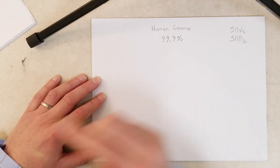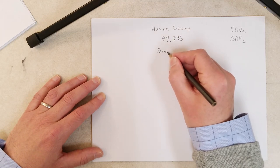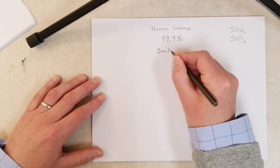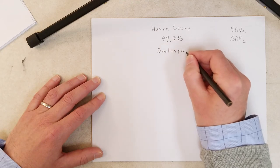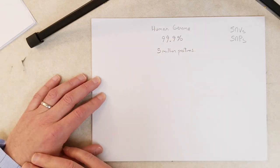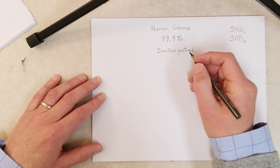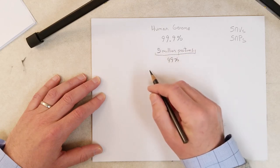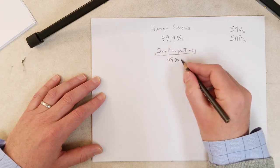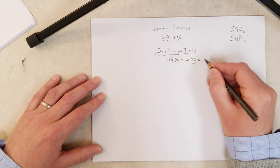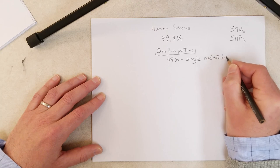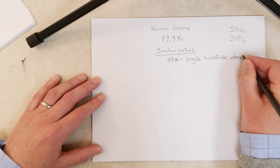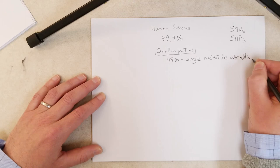The average human genome is only different at five million positions with respect to the human reference genome. 99 percent of these differences are what we call single nucleotide variants, or SNVs.